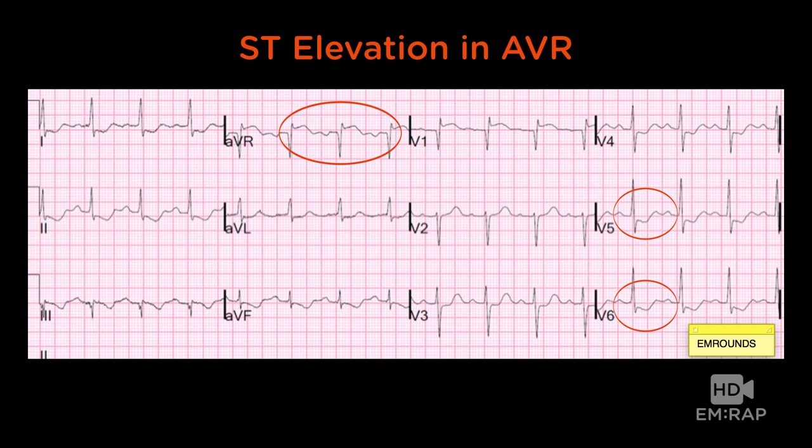ST elevation in aVR with diffuse ST depression everywhere else is a really concerning situation — they might be about to completely occlude their left main or left anterior descending. What's amazing is that the same pattern is completely consistent with a bad PE. So you're really going to have to go with your clinical picture to see which path you're going down; this could be consistent with both a bad MI about to happen and a PE that's ongoing.